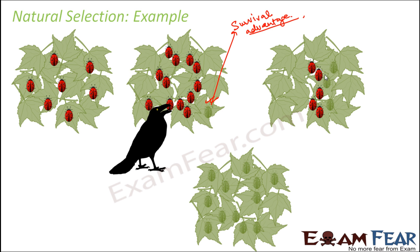After some time, all the beetles were green — the red beetles over a period of time became completely extinct. This shows that with natural selection, evolution can happen. The green beetles evolved from the red beetles: earlier only red beetles existed, but evolution through natural selection made it possible for green beetles to evolve from red beetles.